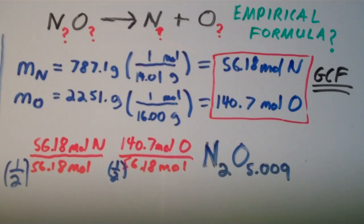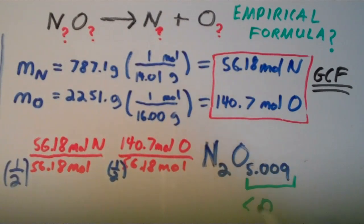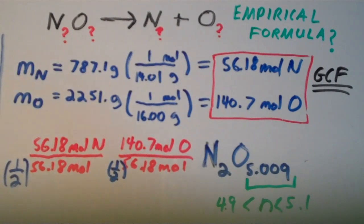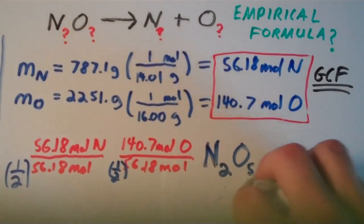The rule is: if a subscript is within one tenth of a whole number — in other words, within plus or minus 0.1 — you can consider it a whole number. So if the subscript for oxygen is between 4.9 and 5.1, it counts as 5. Since 5.009 is within that range, the empirical formula of this compound is N₂O₅.